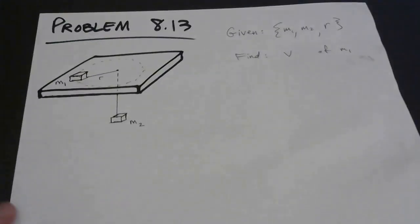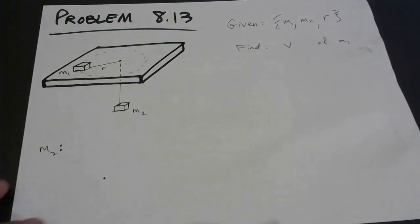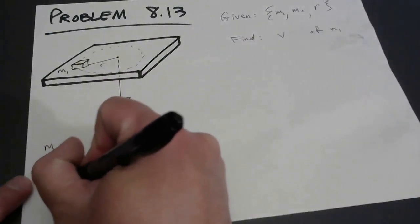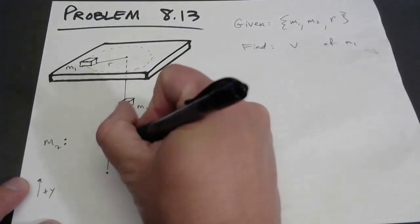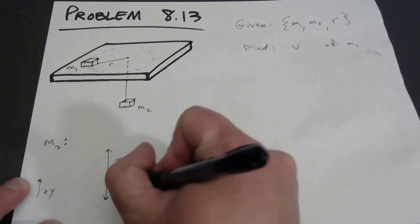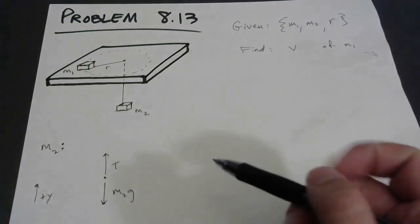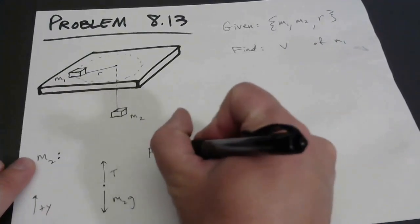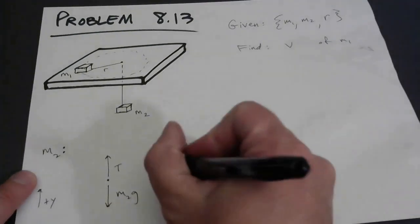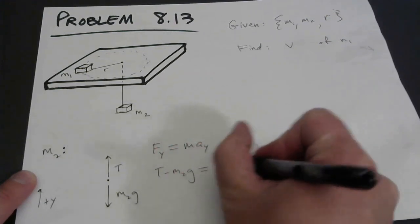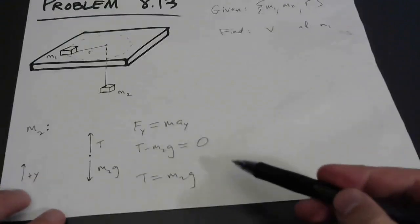It's not a very difficult problem once you set up your free body diagrams. For mass two: I've got tension pulling up and gravity pulling down. I made those vectors the same length because mass two is in equilibrium — the net force must be zero. The sum of forces in the y-direction equals mass times acceleration, which is zero. T minus mg equals zero, so the tension has to equal the weight of the hanging mass.